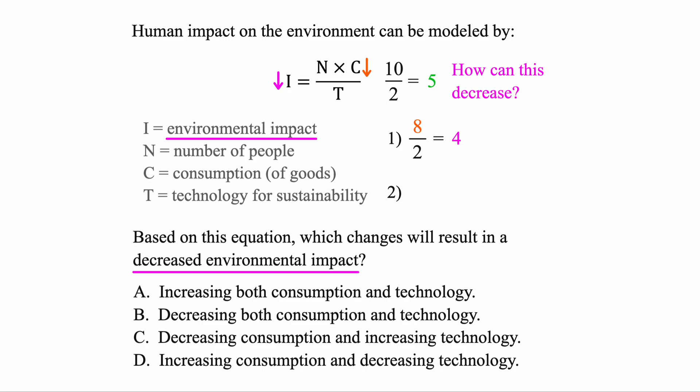But the other thing that works, it's a little tricky, is to make the bottom number bigger. So if we do 10 and then bump this up, let's say to a 5. By making this bottom number bigger, 10 divided by 5, we get 2. And that also results in an overall decrease as well.